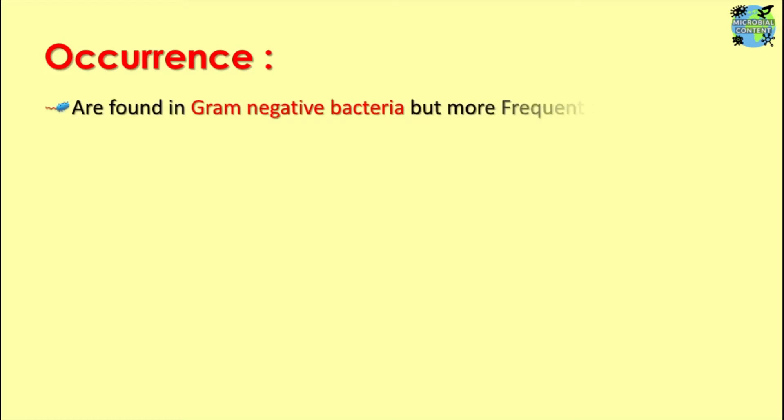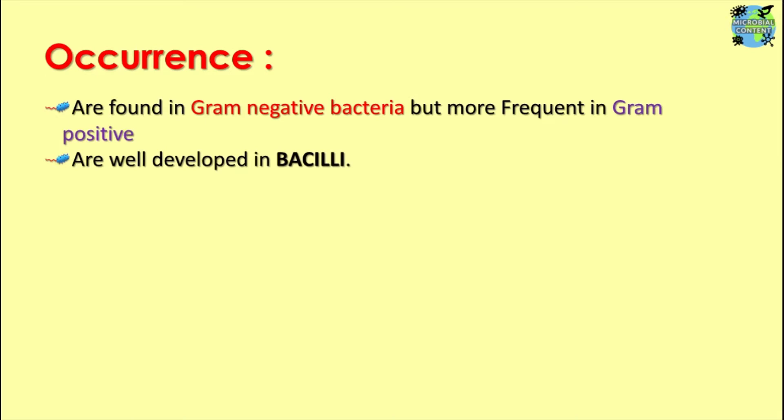They are found in gram-negative bacteria also, but they are more frequent in gram-positive bacteria. These are particularly much more well-developed in the bacilli as compared to the cocci. Overall, these are most common in gram-positive bacilli. They are prominent in gram-positive bacteria, particularly the bacilli as compared to the cocci, and more prominently seen than in gram-negative bacteria.